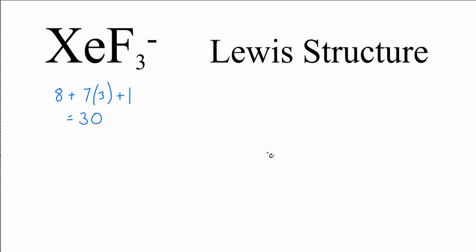We'll put the xenon in the center, it's the least electronegative, so here we have our xenon atom, and then we'll put the fluorines around this. We'll put two electrons between the fluorine and the xenon atom to show the chemical bond.